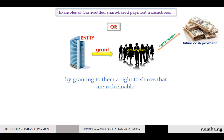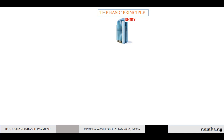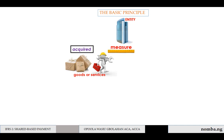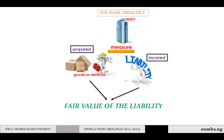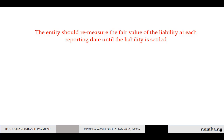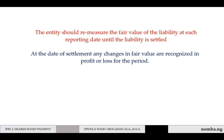The basic principle here is that the entity measures the goods or services acquired or received, and the liability incurred at the fair value of the liability. The entity should remeasure the fair value of the liability at each reporting date until the liability is settled, and at the date of settlement. Any changes in fair value are recognized in profit or loss for the period.